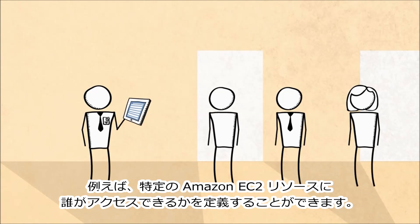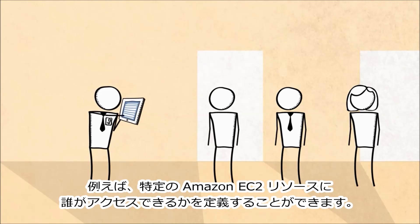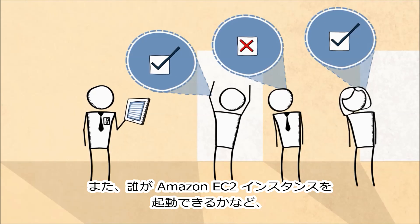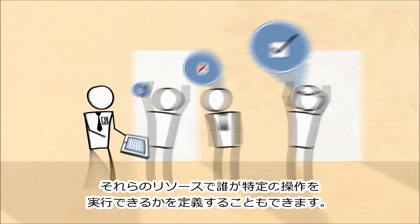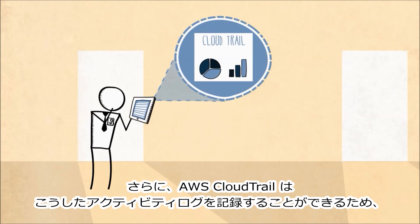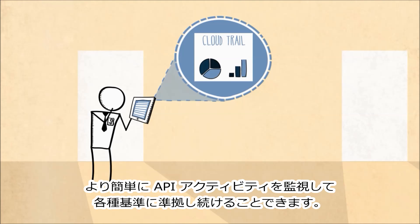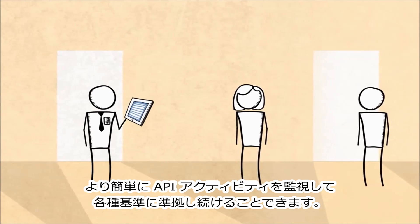For instance, you can determine which users have MFA access to specific Amazon EC2 resources and can perform specific actions on those resources, such as who can launch an Amazon EC2 instance. And with AWS CloudTrail, you can keep logs of these kinds of activities, so it's easier to keep tabs on API activity and stay compliant.